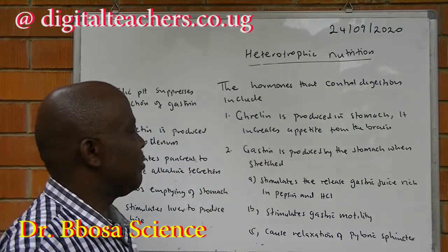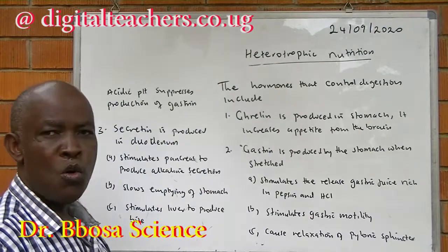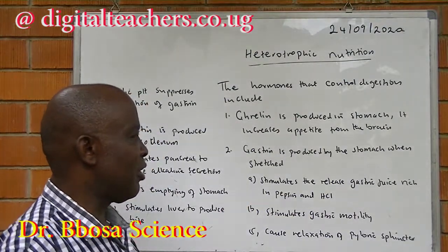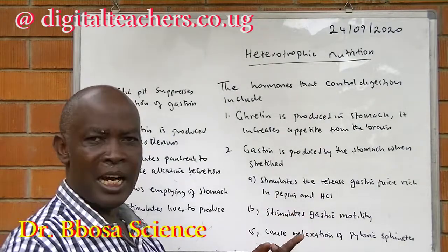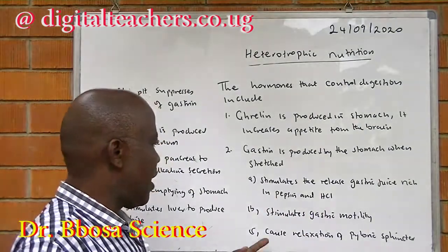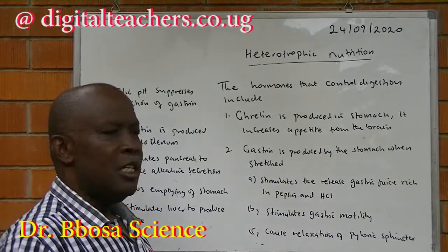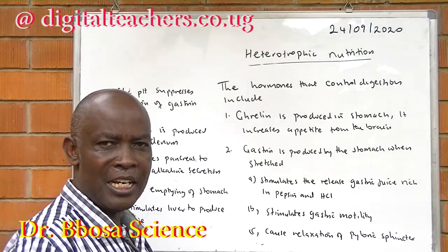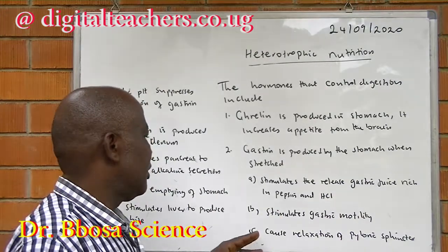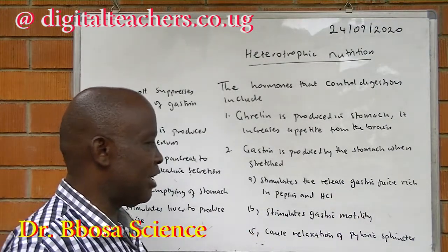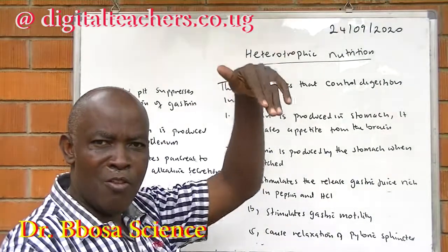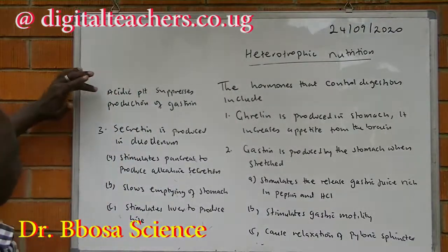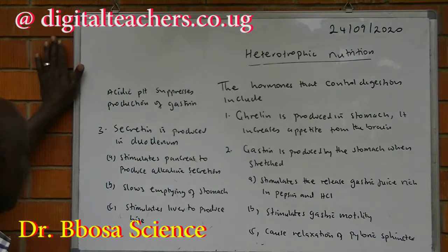Gastrin is produced by the stomach when it is stretched. It stimulates the release of gastric juice rich in pepsin and hydrochloric acid, stimulates gastric motility making the stomach and intestines move faster, and causes relaxation of the pyloric sphincter to allow food to move from the stomach. Acidic pH suppresses production of gastrin.